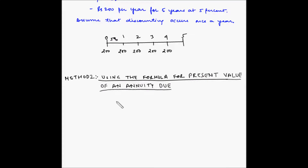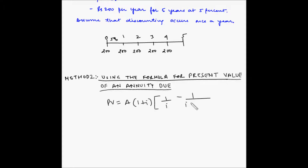Let us use the formula for finding the present value of an annuity due directly — that is our second method. As seen in previous videos, the formula is: Present Value equals A into (1 plus i) into [1/i minus 1 divided by i into (1 plus i) to the power n]. Let us plug in the values: A is 200, into (1 plus 0.05), into [1/0.05 minus 1 divided by 0.05 into (1.05) to the power 5].